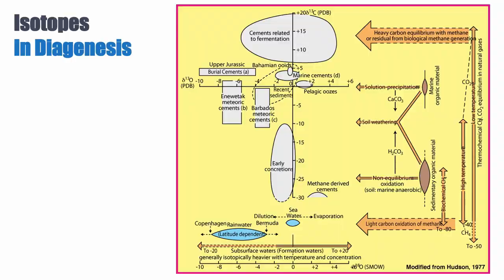We cannot plot carbonates in SMOW unless you only want to represent oxygen, because SMOW doesn't have carbon. So this is all plotted in PDB. You can see that different types of cement plot in very discrete regions. For instance, cement related to fermentation plots with very heavy delta C13, whereas early concretions associated with lots of CO2 in pore water plot with very light delta C13.